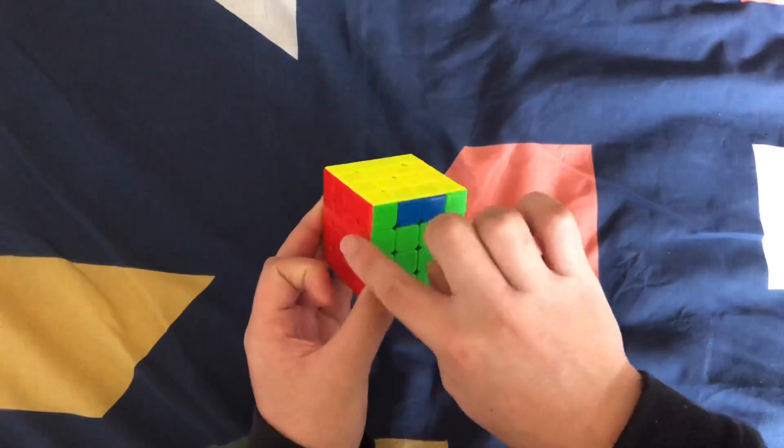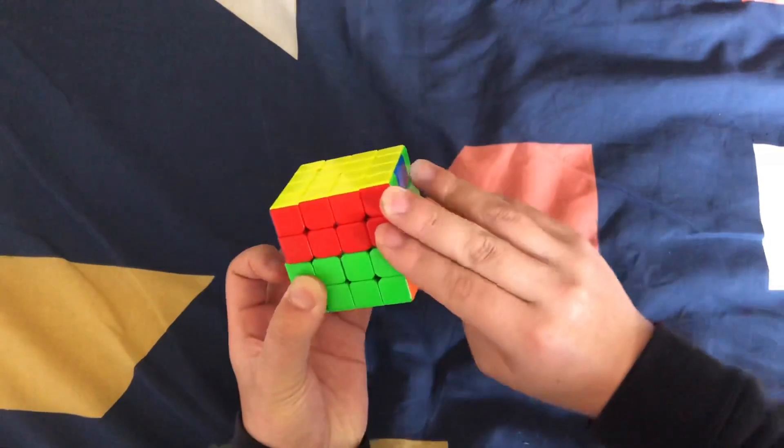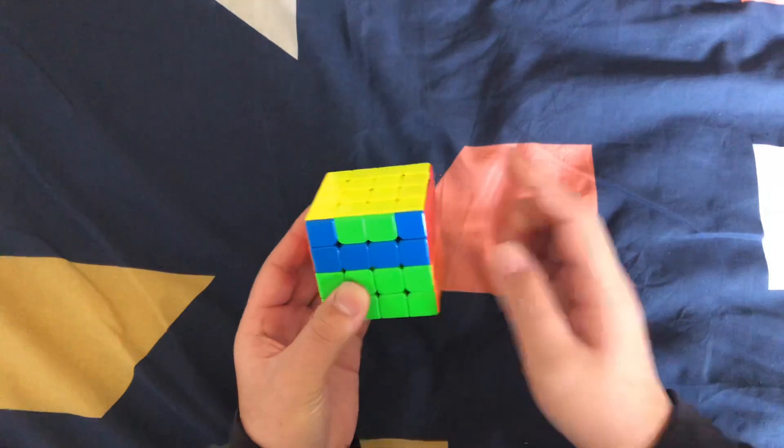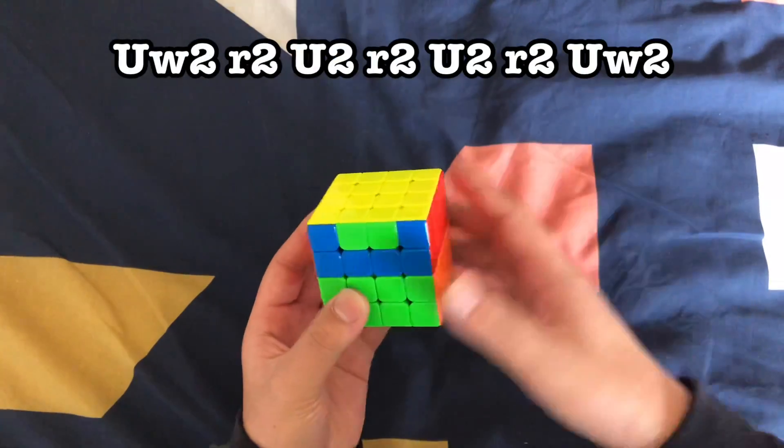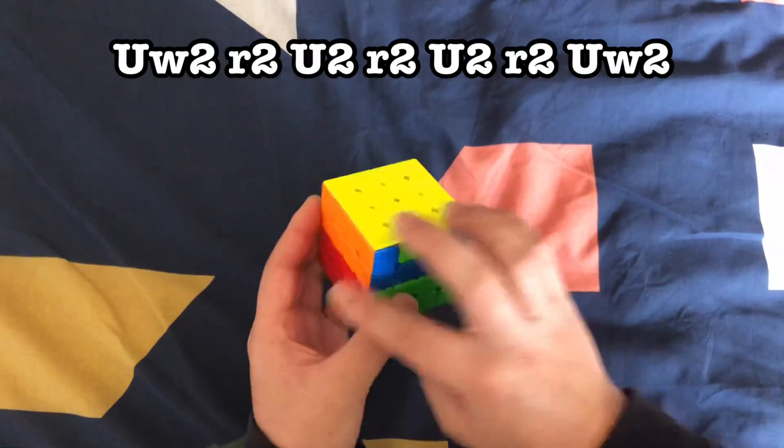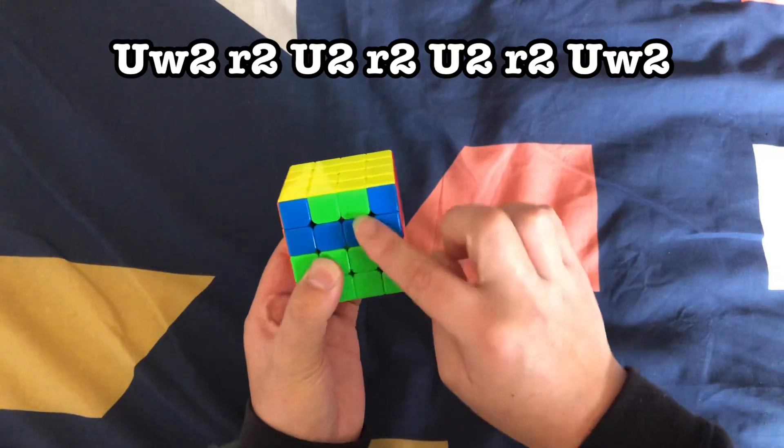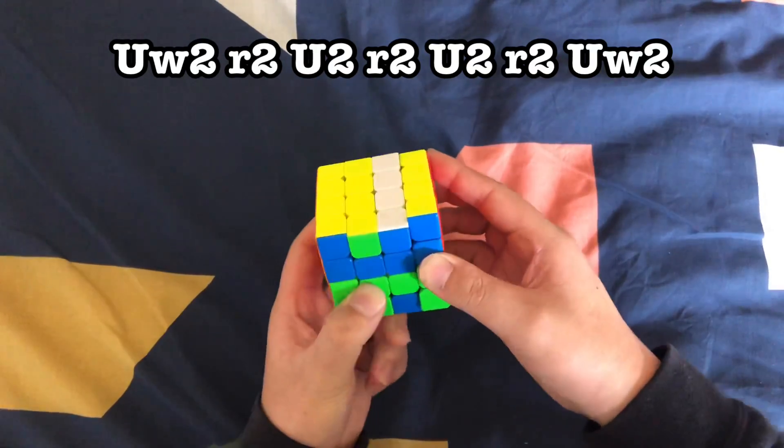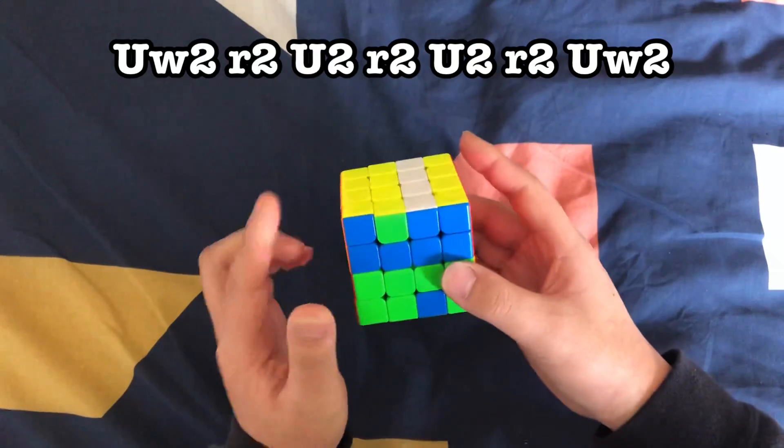So what you want to do is first off, move these two layers together twice. And I'll also put the algorithm on top, but it's easier to remember without the algorithm. So turn it twice. You want to move this middle layer twice. And then spin the top, just the top, twice.